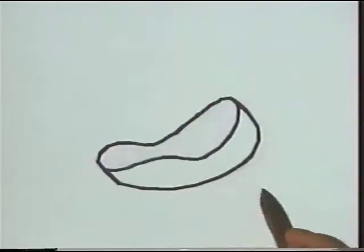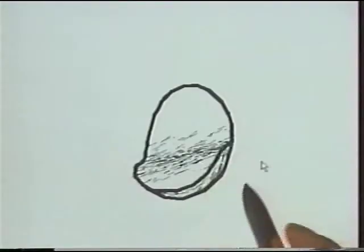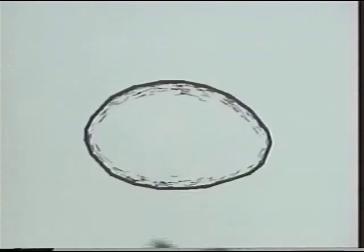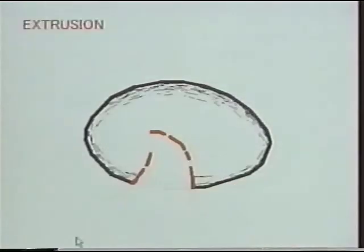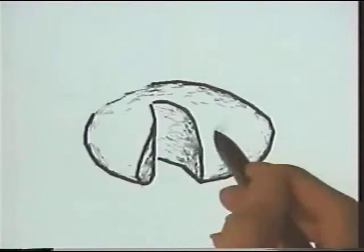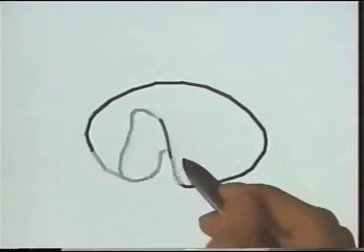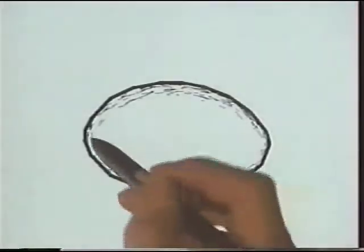You can cut the object by drawing a stroke that crosses the object. With the same operation, you can also take a bite out of the object. This is useful to create a mouth.